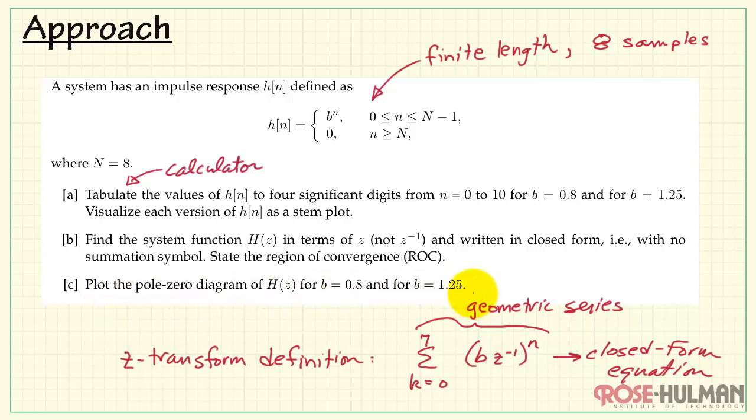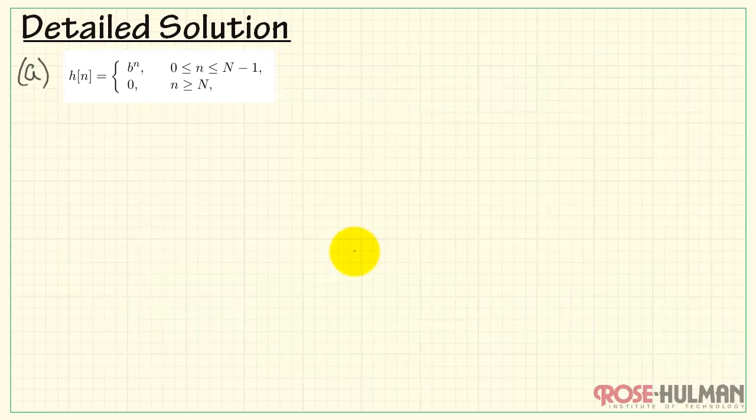We have a closed form equation for the geometric series and you can apply that to this result here. Finally, we want to plot the pole zero diagram H of the system function H of Z for two cases of B. The denominator roots are the poles and the numerator roots are the zeros. Alright, let's move on to the detailed solution.